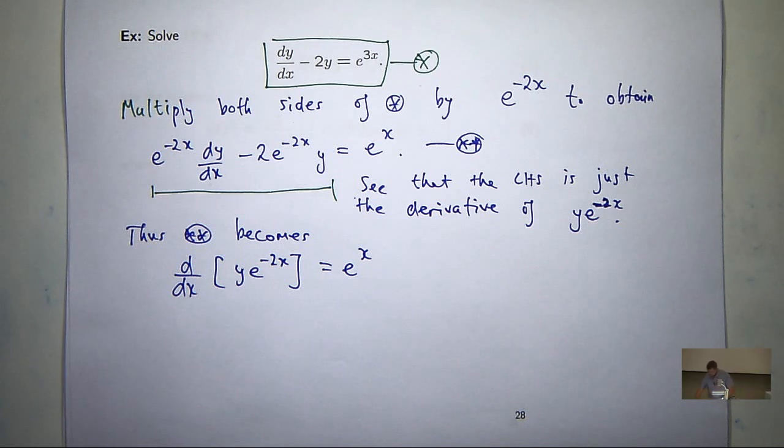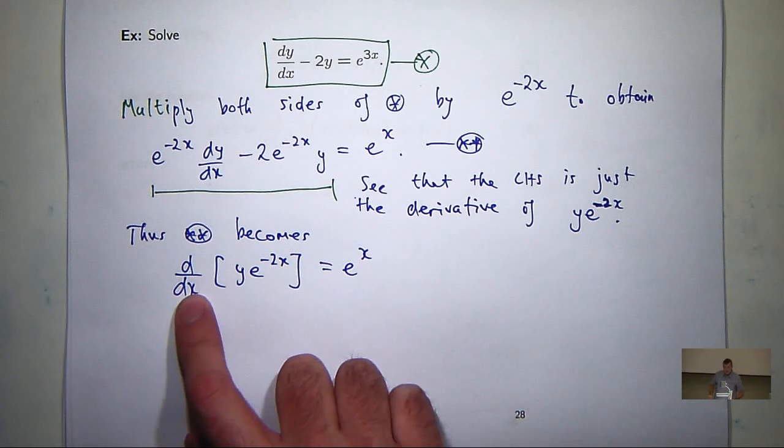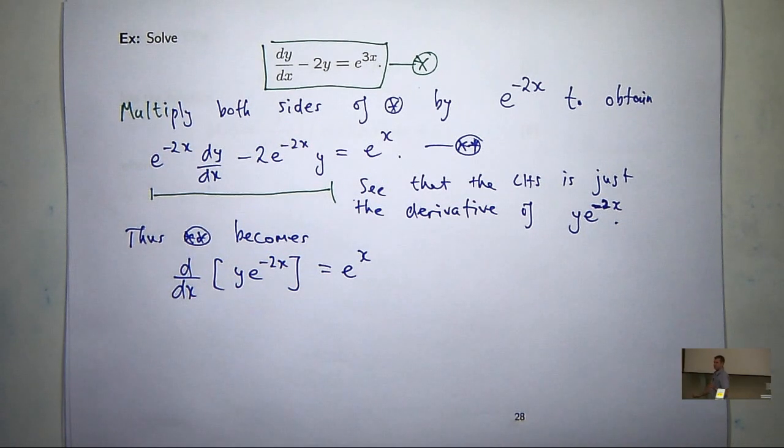What I can do now is actually undo that ddx, that derivative, just by integrating both sides. What I'm searching for, remember, is the solution y, which is a function. So to undo that, I'm just going to integrate.